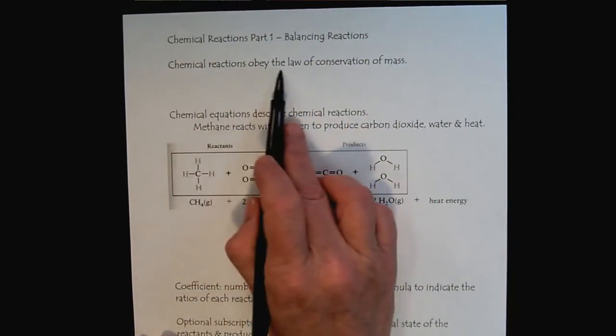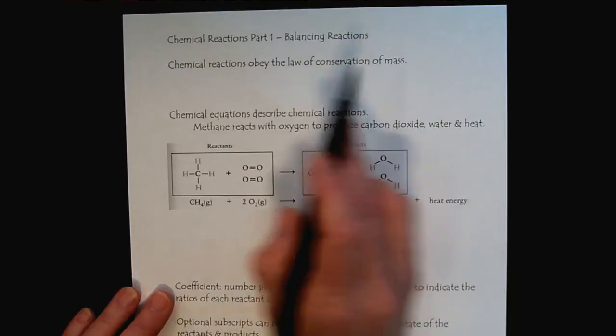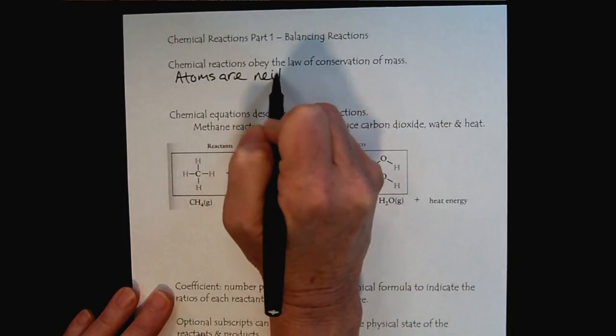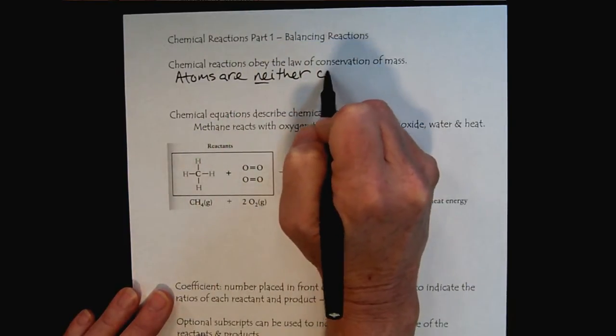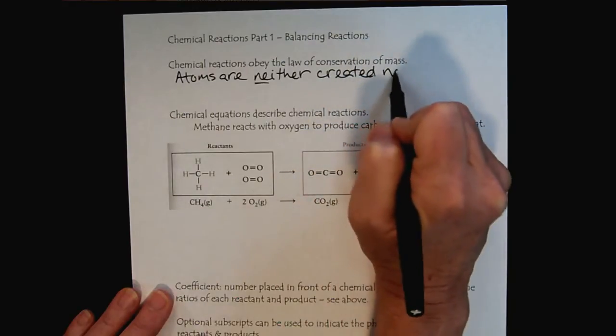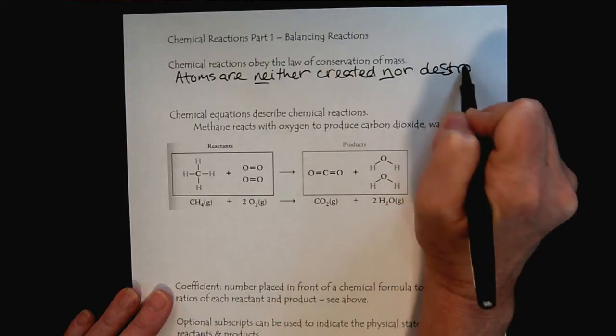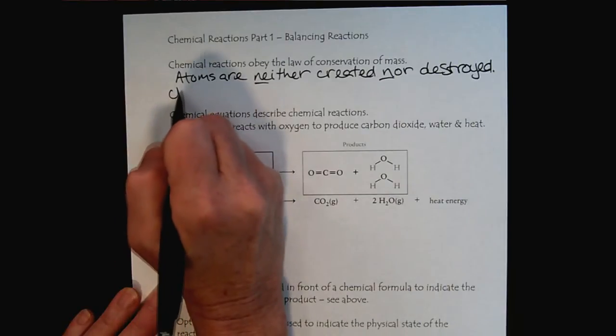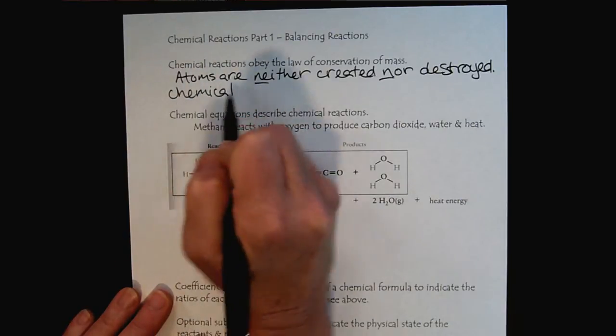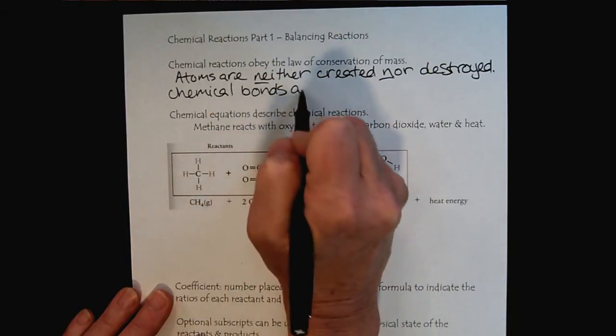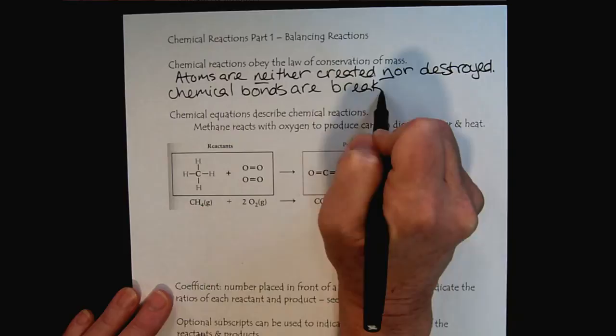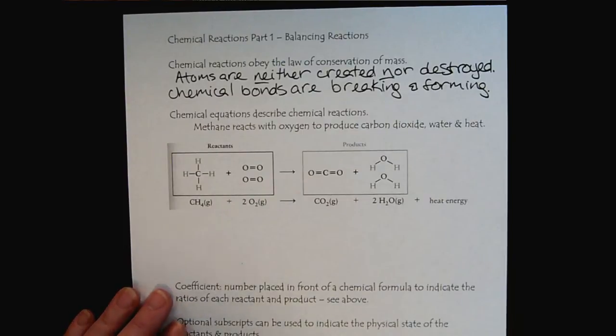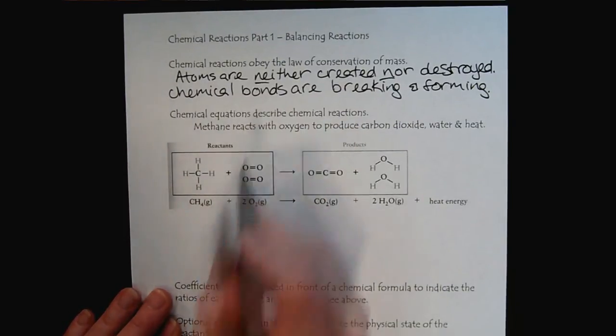Chemical reactions obey the law of conservation of mass. That means that atoms are neither created nor destroyed. What's happening is that the chemical bonds are being broken and formed. So really a chemical reaction is simply about rearranging how the atoms are connected through the bonds.